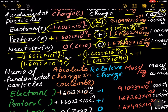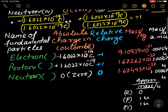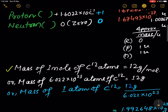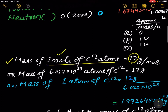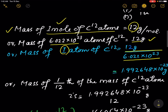The mass of the electron in terms of u is 0.00054 u, and the mass of the proton in terms of u is 1.00727 u. To understand this, the mass of 1 mole of C12 atoms is 12 grams per mole. 1 mole means 6.022 × 10²³ atoms. The mass of 6.022 × 10²³ atoms of C12 is 12 grams. So the mass of 1 atom of C12 is 12 divided by 6.022 × 10²³, which gives 1.992648 × 10⁻²³ grams.